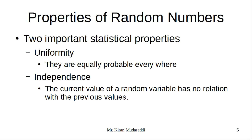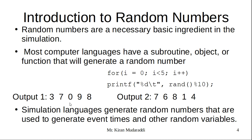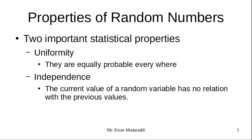There are two important statistical properties: the numbers should be uniformly distributed, that is uniformity, and one number is not related with another number. The current value of a random variable has no relation with the previous value. For example, 7 is not at all related with 3, and 0 is not at all related with 7. If you generate random numbers like 10, 20, 30, 40, the next number can easily be known as 50. It should not be like that—nobody should guess what is the next number. That is independence.